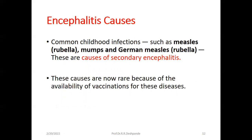Common childhood infections can also cause encephalitis — for example, measles, rubella, mumps, and German measles. These cause the secondary type of encephalitis. However, these causes are now rare because of the availability of vaccination for these diseases.